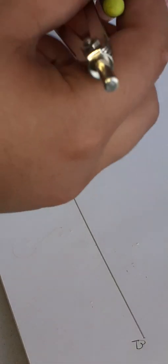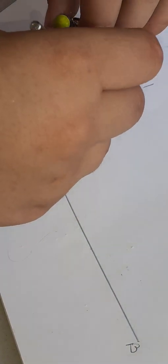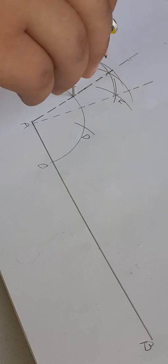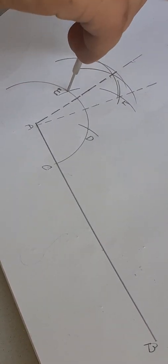Put your compass needle at the junction of two intersecting arcs and cut an arc here, and put your compass needle at E and cut an arc here.